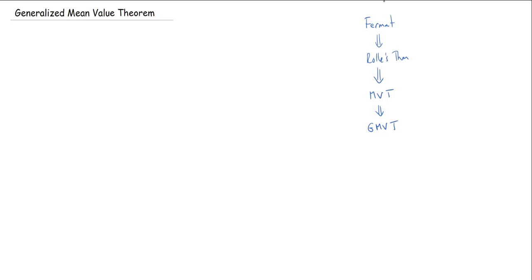The generalized mean value theorem is going to be a consequence of the mean value theorem, and it's essentially going to look at the ratio of slopes of two different functions. So we're going to start very similar to before, only we're going to have two functions now. f and g are going to have a common domain closed interval [a,b]. We're going to assume that f and g are continuous on that closed interval, and that f and g are differentiable on the open interval. Just like the mean value theorem, we don't have to assume anything about their specific values at the endpoint.